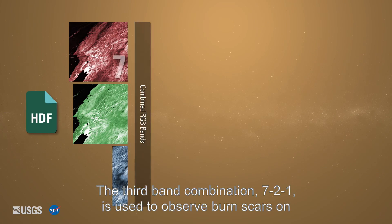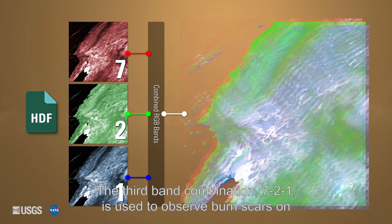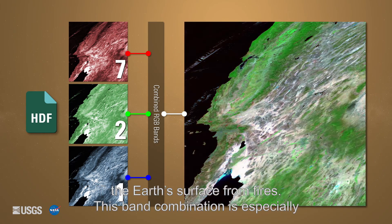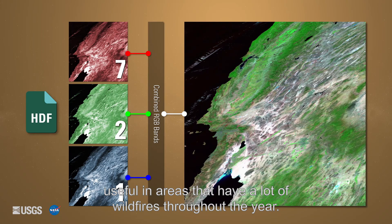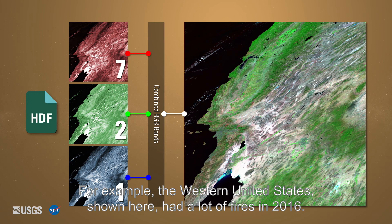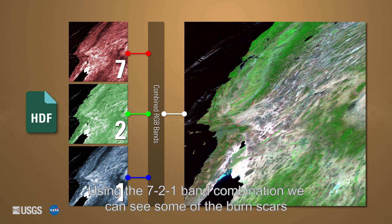The third band combination, 7-2-1, is used to observe burn scars on the Earth's surface from fires. This band combination is especially useful in areas that have a lot of wildfires throughout the year — for example, the western United States, shown here, had a lot of fires in 2016. Using the 7-2-1 band combination, we can see some of the burn scars from these fires.